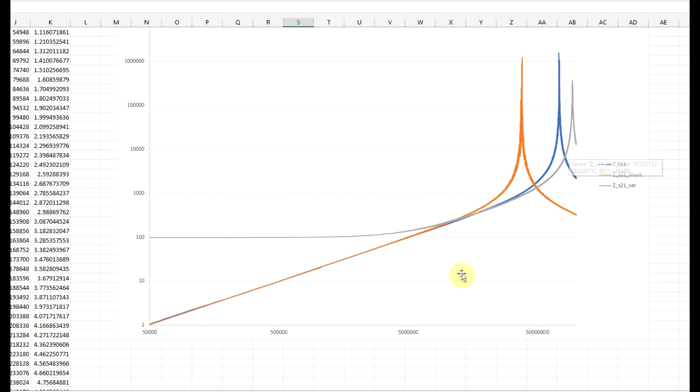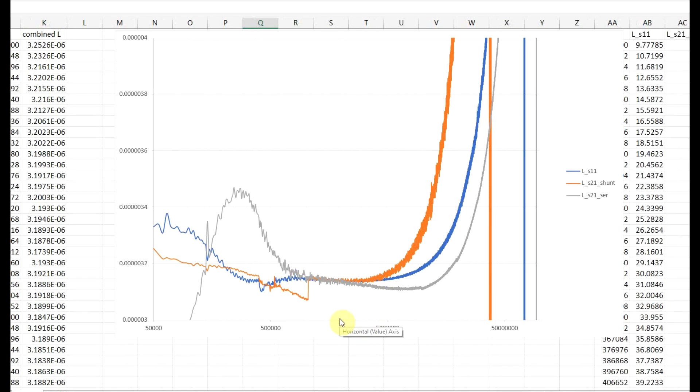Now, since the component that I was measuring was an inductor, I also extracted the inductance value from the three methods. So, we can see that all of the three methods are giving us a value close to 3 microhenry, so this is 3.2 microhenry, 3.0 microhenry, but again, we can see that there's a difference in between the measurements.